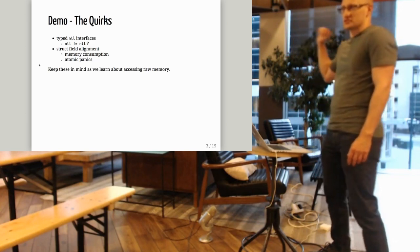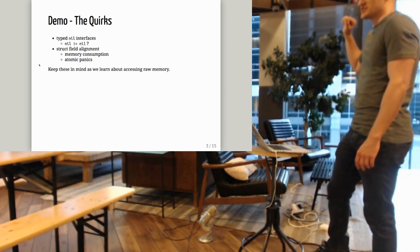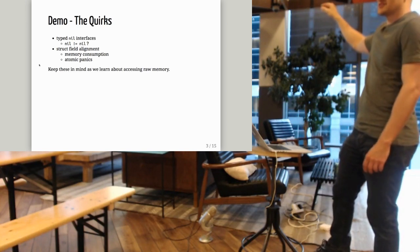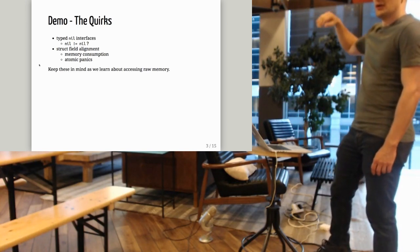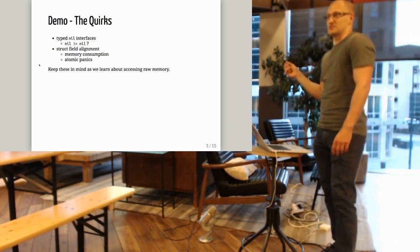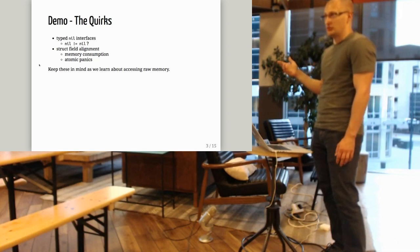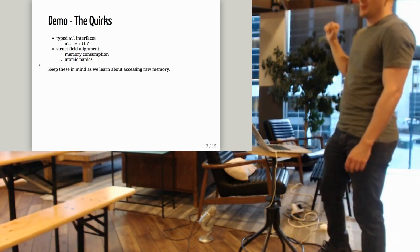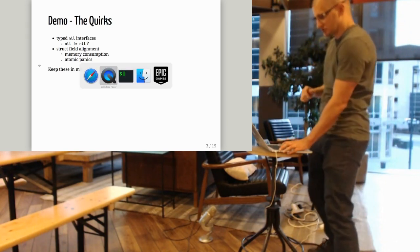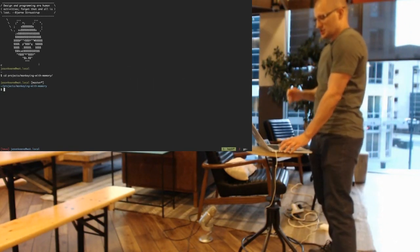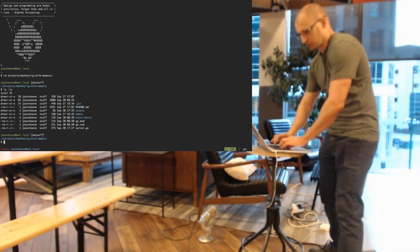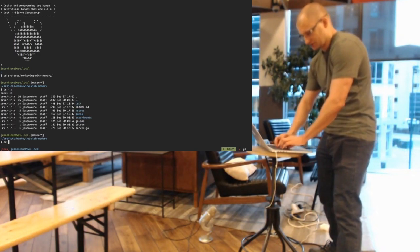So the quirks — there are two that I'm going to address tonight: typed nil interfaces, where a nil interface is actually not nil, and struct field alignments. I'm going to demo those. You might have actually run into these yourself.